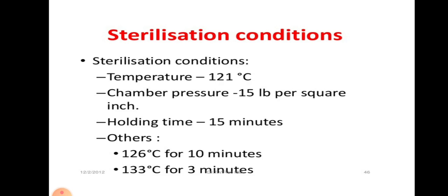Sterilization conditions of an autoclave: the temperature is above 100 degrees centigrade, that is 121 degrees centigrade, which is obtained when 15 LBS pressure per square inch is applied. This is held for 15 minutes to destroy all vegetative cells and spores of bacteria and viruses. The timing can be reduced to 10 minutes where the temperature is maintained at 126 degrees centigrade, and at 133 degrees centigrade the holding time is 3 minutes.